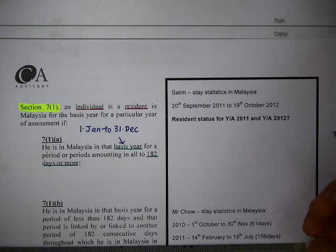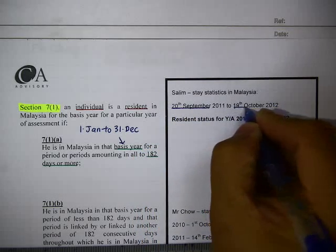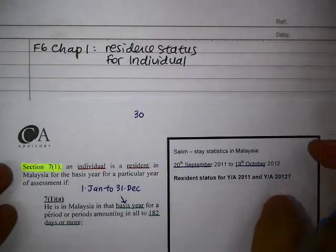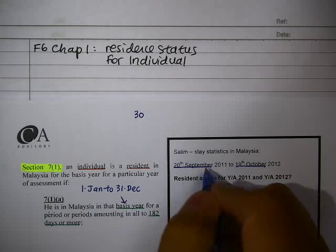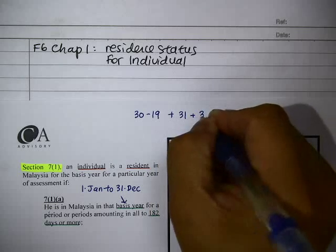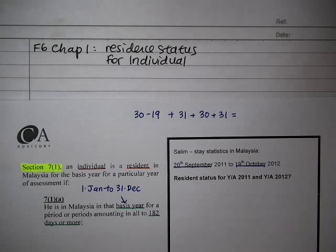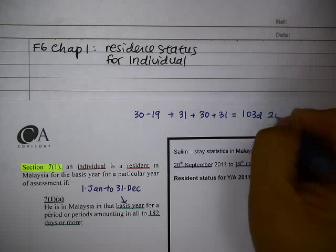The first thing we need to do is count how many days Salem is in the country. September has 30 days, and he's in from the 20th, so from the 1st to the 19th he is not in — we take out 19 days. Then we add the days for October, November, and December. So: 30 minus 19, plus October, November, December gives us 103 days in 2011.